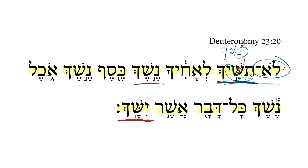You shall not lend at interest — or lend with interest — to your brother. This is the kicker in this particular verse: you shall not lend to your brother. Because in the next verse, we're going to see you can lend to foreigners but not to your brother. So this is particularly about lending at interest to your family members or to your brothers within Israel.